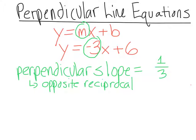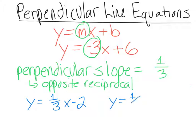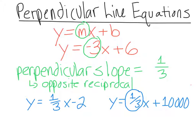Now all I have to do is come up with equations where I have positive one-third as my slope. I can use any y-intercept I want. An example of a perpendicular line would be y equals positive one-third x minus 2, or y equals positive one-third x plus 10,000. It's going to be perpendicular because it has the opposite reciprocal of our original equation.